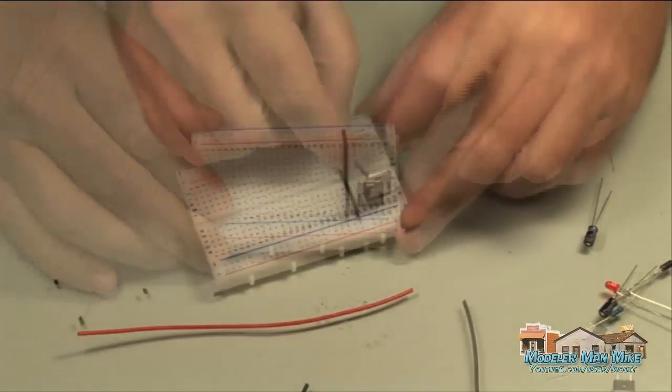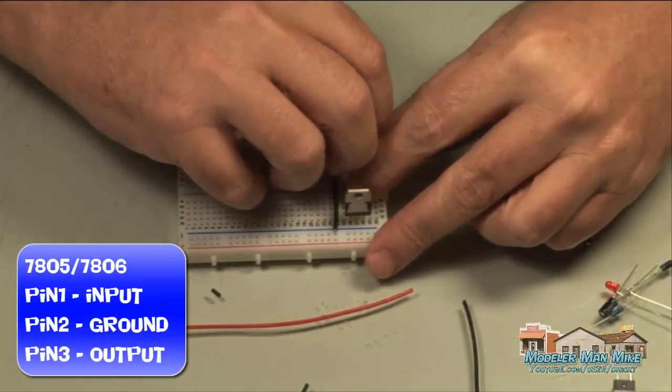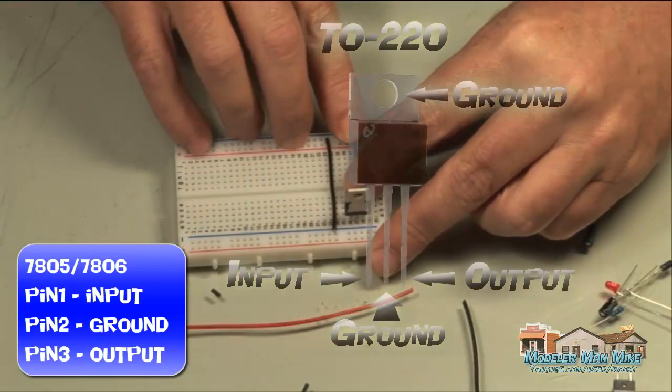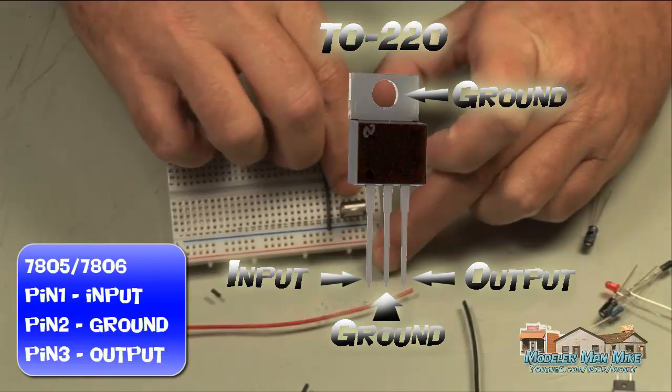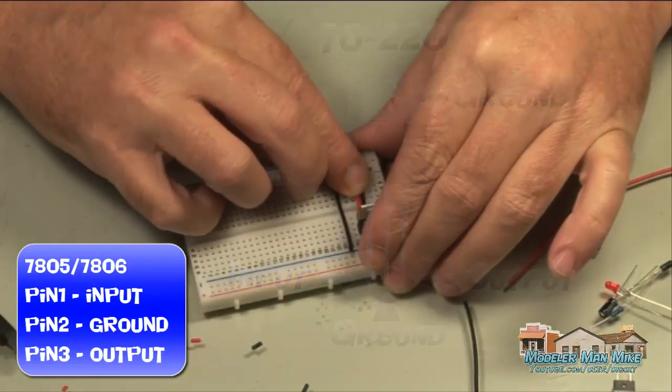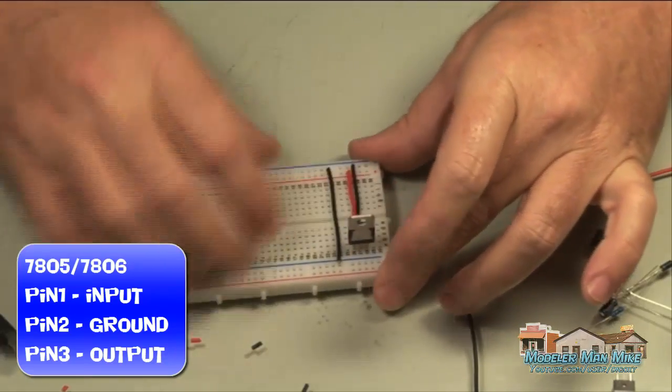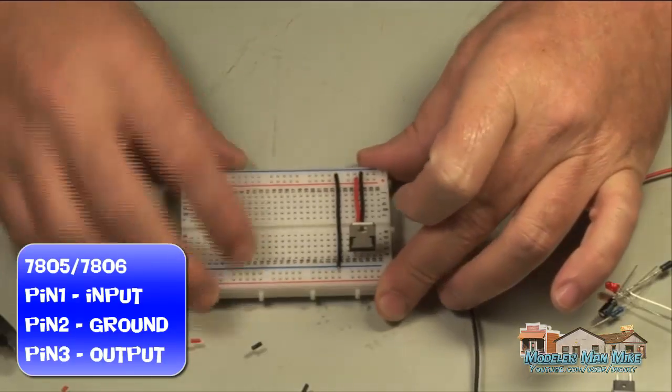So I just put this 7805 in here and I'm gonna run the ground to the center pole on the 7805, that's the ground lead. I'll just continue on like this. Now the third lead on the 7805 or 7806 is the output.